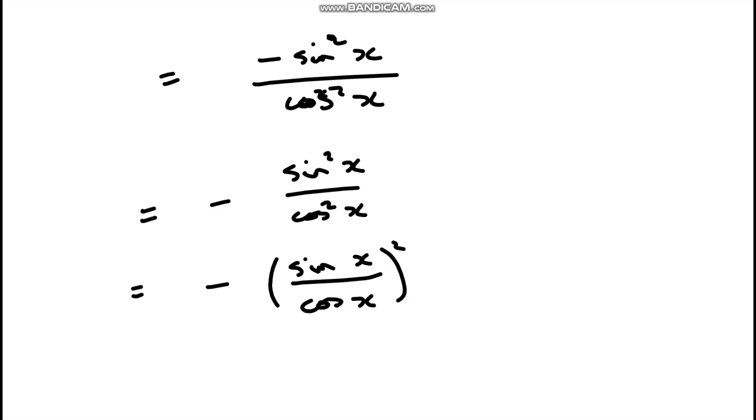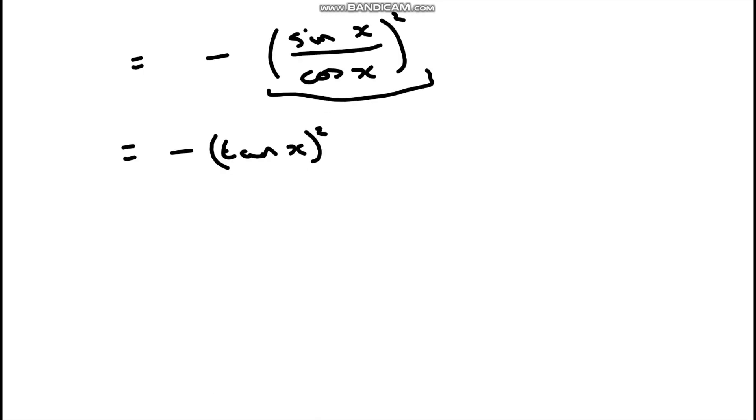I've got myself this bit in the bracket which we know from what we've talked about above is tan x. So we have got ourselves tan squared x, which is the right hand side, which is what we want to prove.